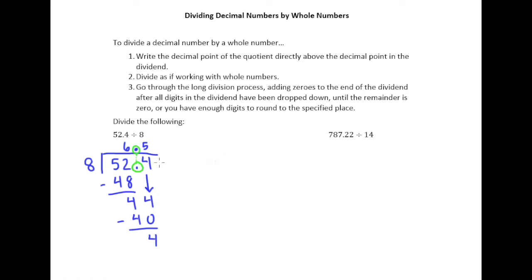And so the way we make that happen is we say that 52.4 is the same as 52.40. I think we can agree with that. 52.4 is the same as 52.40. And so we can drop our zero down. And so now all of a sudden I do have a digit to drop down and continue.